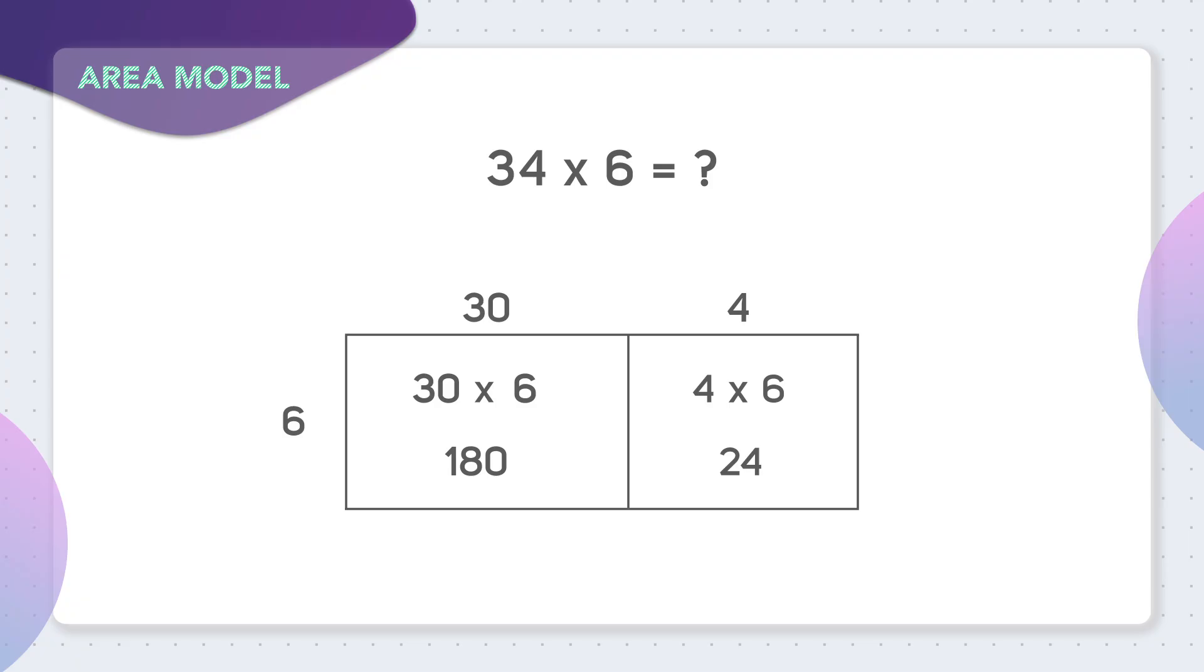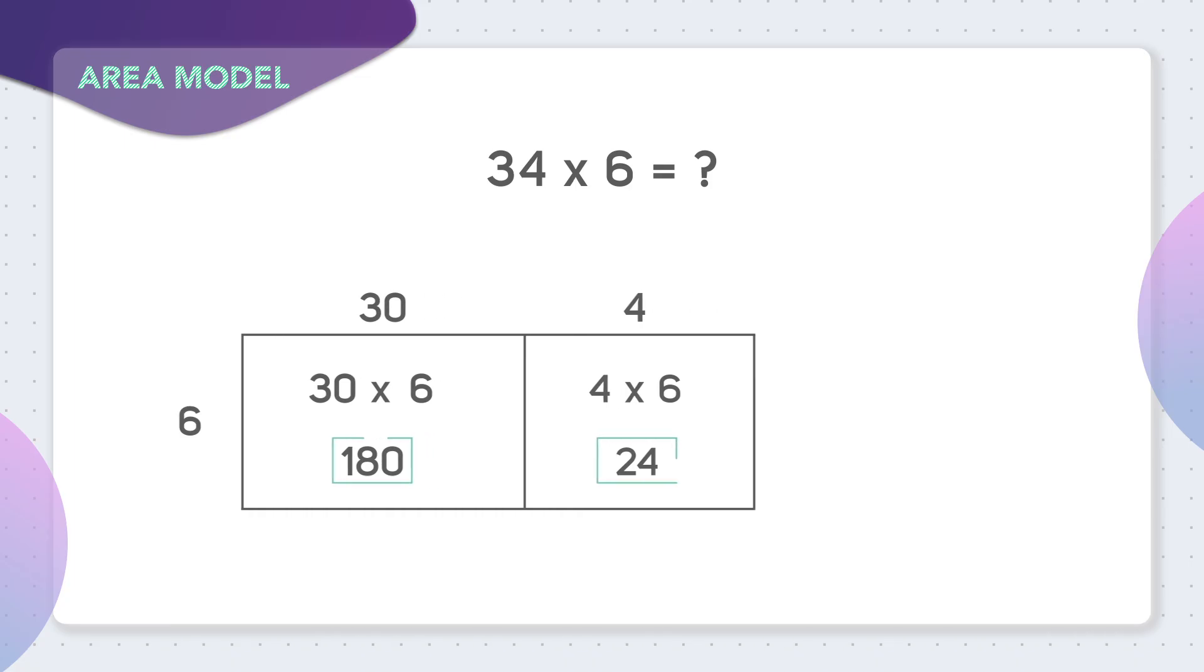Now that I've finished multiplying both parts of my area model, what do I need to do to find my answer? Well, now that you have your pieces, you need to add them together. So we will add 180 plus 24.